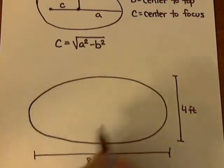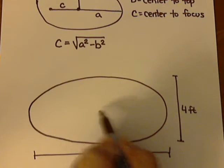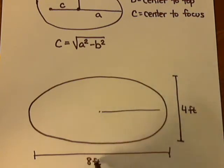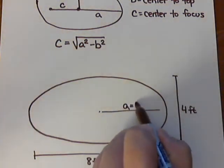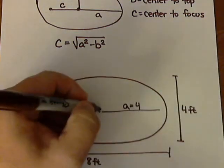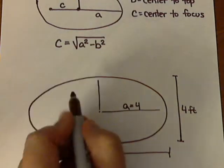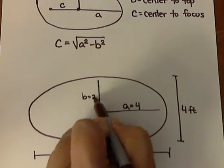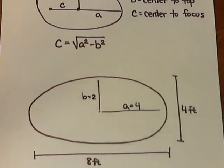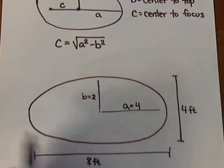So, we need our values. Well, the a is from the center over to the edge, so that's going to be half of the total distance, so that's going to be 4. The b is going to be the distance from the center to the top or the bottom, and since the total distance is 4, then that distance is going to be 2. So our a is 4 and our b is 2.